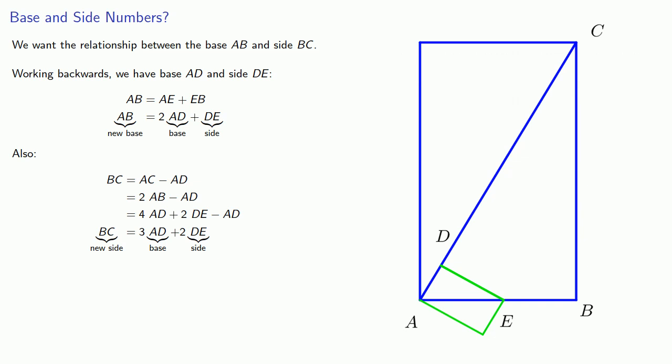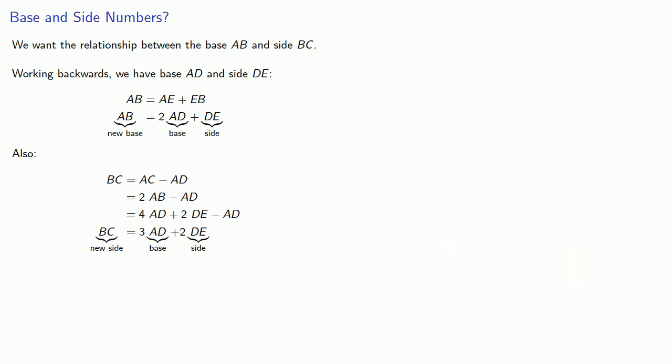And so this gives us a relationship between the base and side of a rectangle where the diagonal is twice the base. And so maybe we'll begin with a base of 1 and a side of 1. And our relationship says that the new base is twice the old base plus the side.